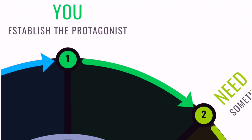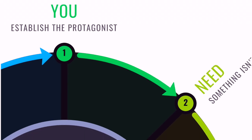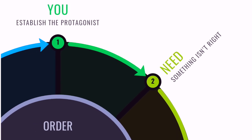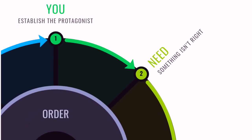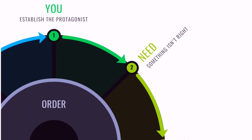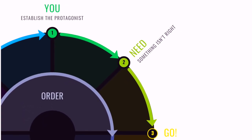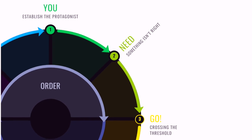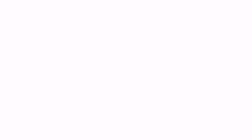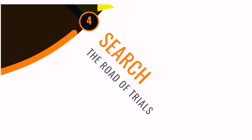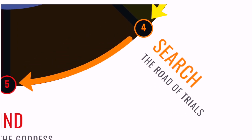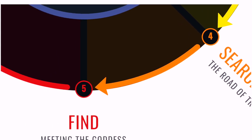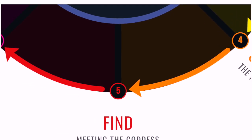At the beginning of the story circle, we've got the character — the protagonist — a status quo, but something isn't right. They need something. They go and cross into this unknown world, this weird new place. They are looking for that thing that they want in part four. They are tested; they have to learn and adapt.